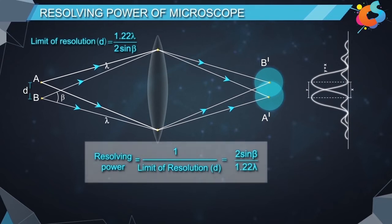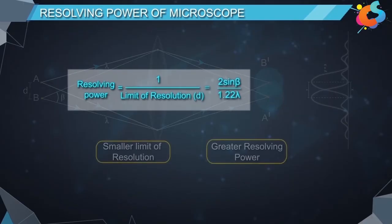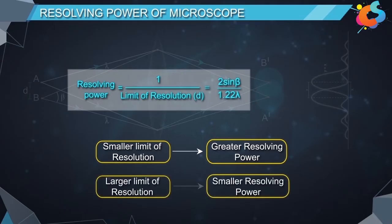From this expression, we can say that the resolving power of a microscope will be greater when the limit of resolution is smaller and resolving power will be lower when the limit of resolution is larger.